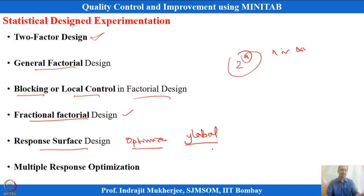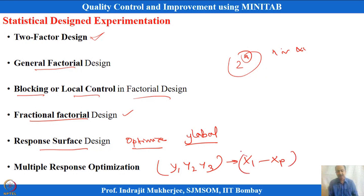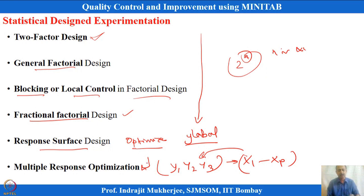There will be scenarios when we have multiple y's—CTQs more than one, interrelated with each other and with x1 to xp. If we develop a function capturing the interrelationship between y1, y2, y3, we can also optimize that. Initially we will discuss single response optimization, then multiple response optimization—the theories behind it and how to implement it in Minitab.